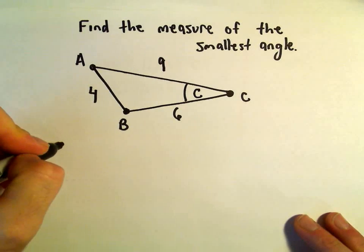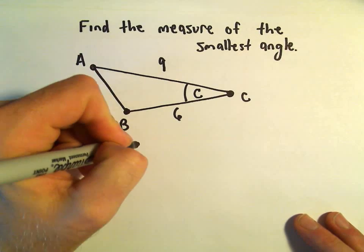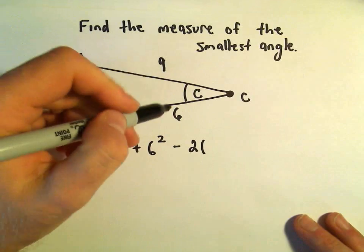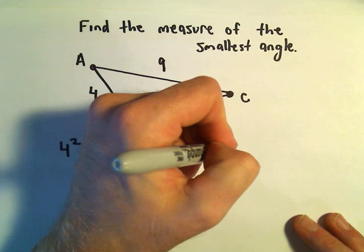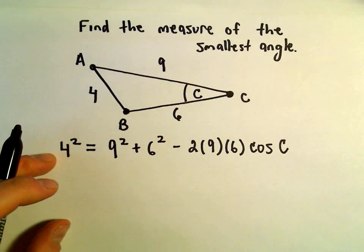We can use the law of cosines. So 4² equals 9² plus 6² minus 2 times 9 times 6 times cosine of angle C.